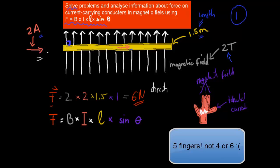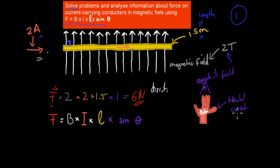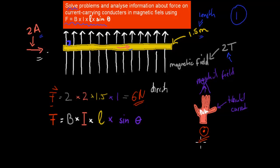So we've got our direction here for the magnetic field and our direction for the current. What happens when you do that is your palm ends up facing you, which means the force itself is coming towards your face. So the direction of the force is coming out of the computer into your face — out of the page. So our force is 6 newtons, and the direction is out of the page towards you.